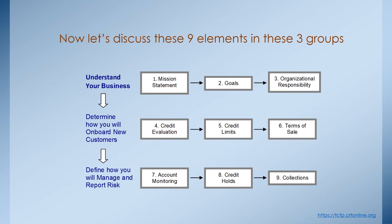The next section is goals. These goals should map back to your mission statement for your credit department. Here's where you want to define in some objective way what objectives or goals you're going to have to support the mission statement — such as DSO, currency percents, delinquency percents in your AR, and time to approve orders. Last but not least in understanding your business is who within your credit department will be responsible for what actions — who's going to collect the data needed to make decisions, and who will make decisions, escalate decisions, review decisions, and handle objections.